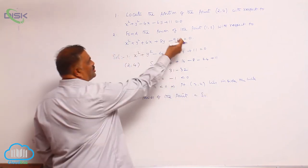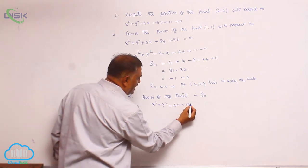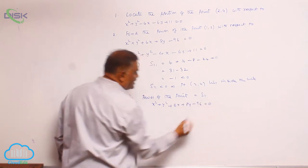That means same substitution: x² + y² + 6x + 8y - 96 = 0.